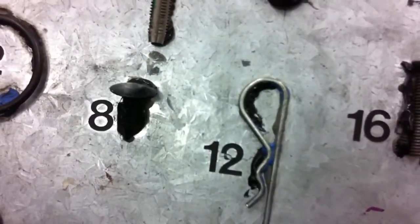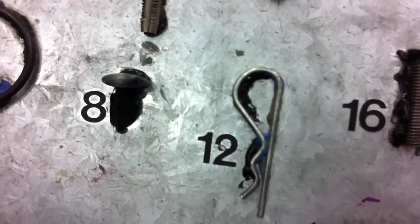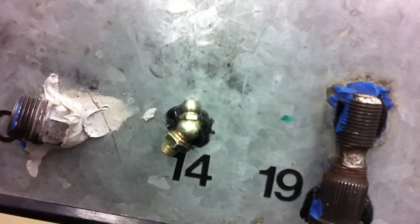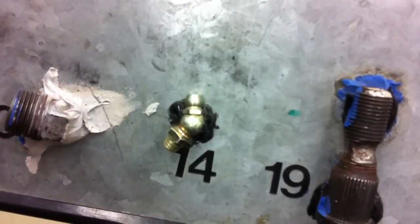Number twelve is a spring lock pin. Number thirteen is a cotter pin. Number fourteen is a grease nipple or a zerk.